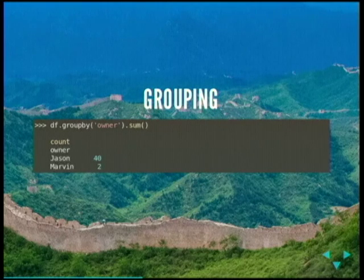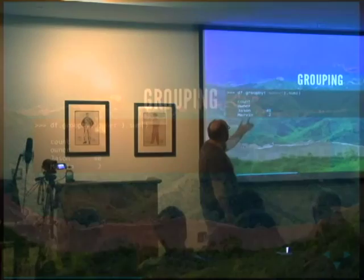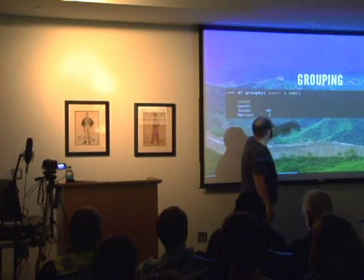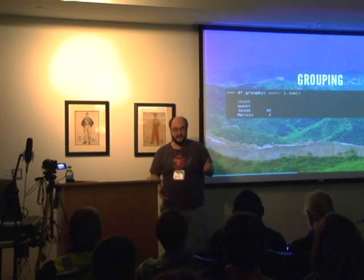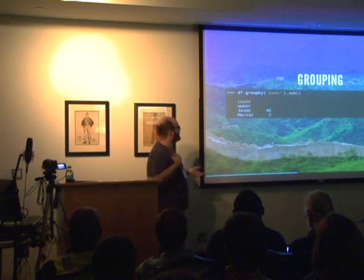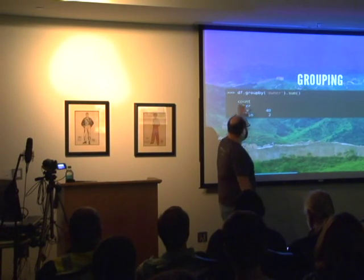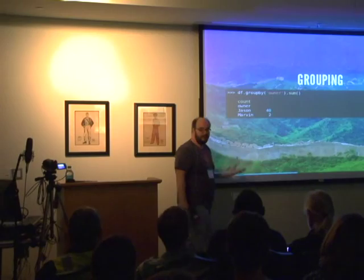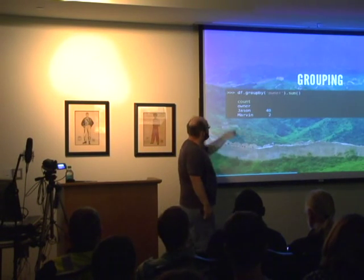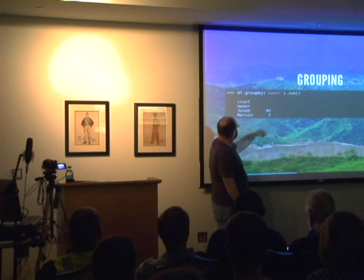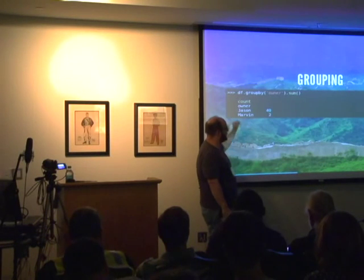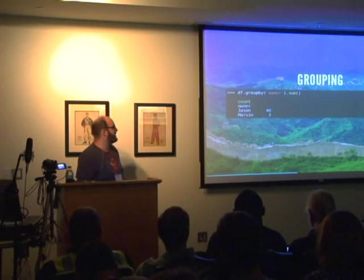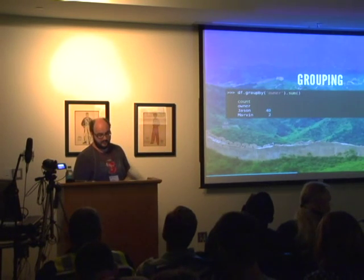Let's look at grouping. I want to group by the owner of the cookies and sum the numeric values. I didn't tell it what value to sum — it found the one numeric value in the data frame and summed it. That's another syntactic sugar in pandas: if I had two integers, it would sum them both. The result is a series object containing those grouped totals.